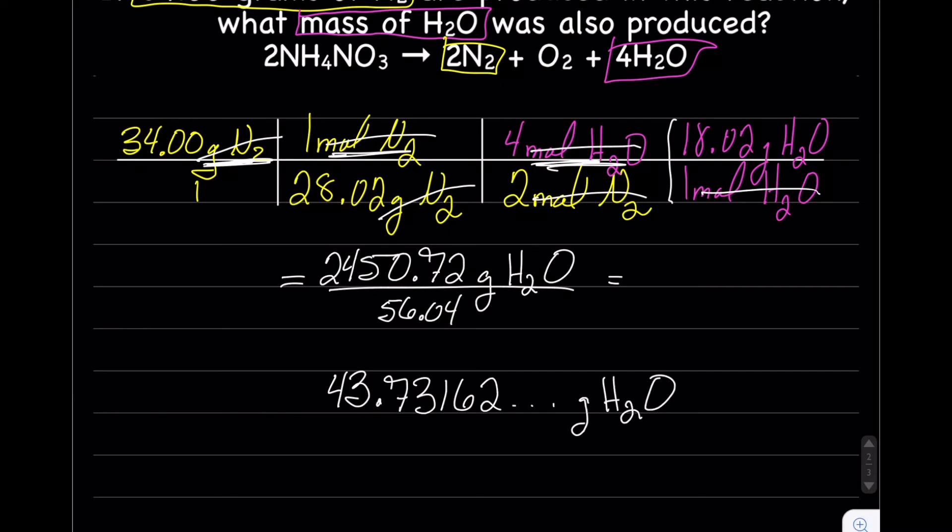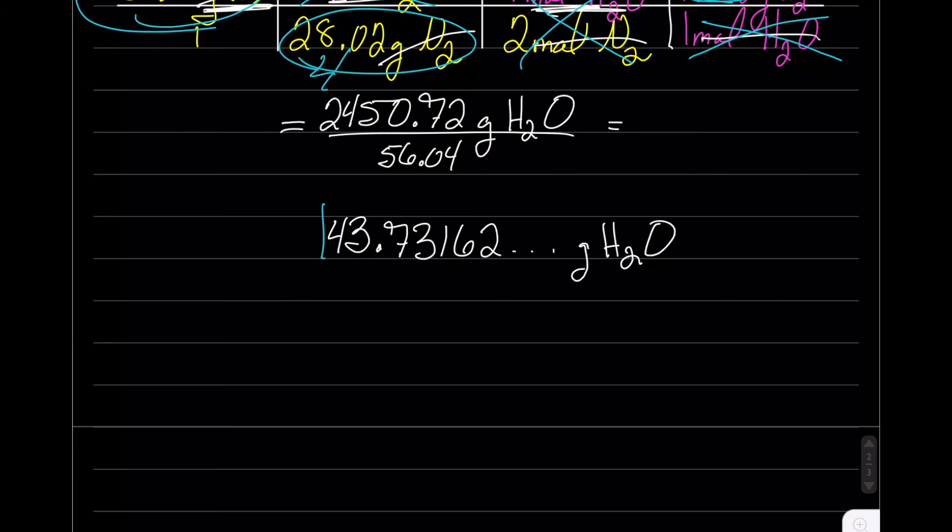So now we've got to figure out sig figs. Remember, sig figs comes from the given and anything we calculated. Our given right here had four sig figs. This molar mass, we calculated that, so four sig figs. So four sig figs it is. We're going to keep those four. The first number we're going to drop is a one, which is less than five. So our final answer is 43.73 grams H2O.